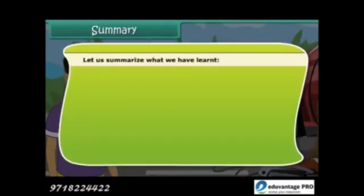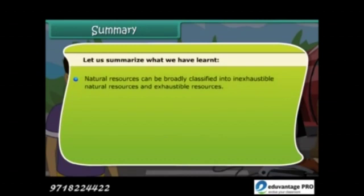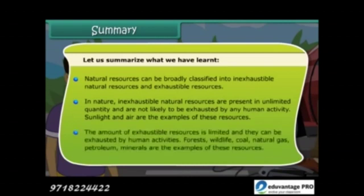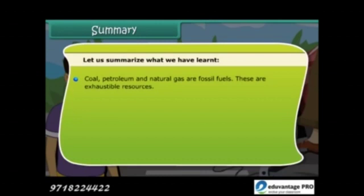Let's summarize what we have learned. Natural resources can be broadly classified into inexhaustible and exhaustible resources. Inexhaustible natural resources are present in unlimited quantity and are not likely to be exhausted by any human activity — sunlight and air are examples. The amount of exhaustible resources is limited and they can be exhausted by human activities. Forests, wildlife, coal, natural gas, petroleum and minerals are examples. Coal, petroleum and natural gas are known as fossil fuels. Coke, coal tar and coal gas are all products of coal.